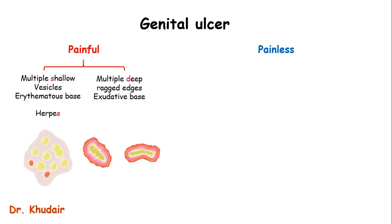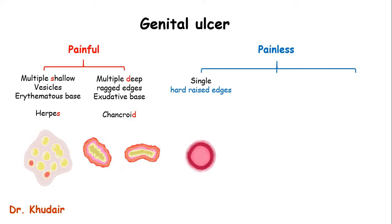Next, if there were multiple deep ulcers with ragged edges and their base has yellow-gray exudates, this is chancroid. So deep goes with chancroid.